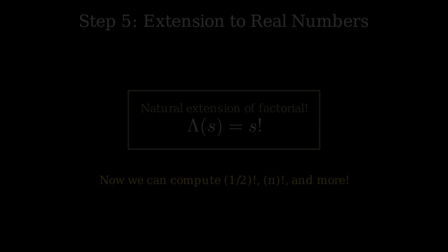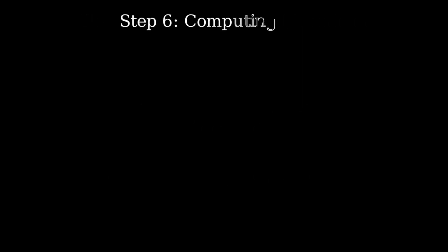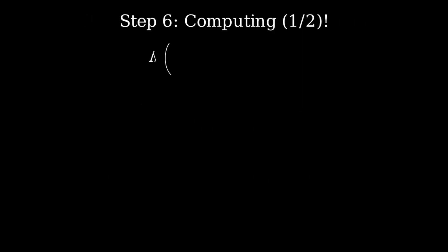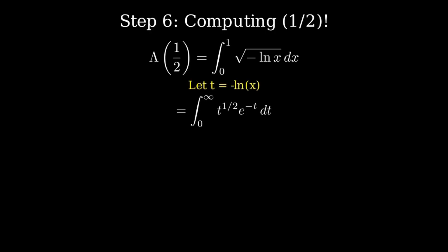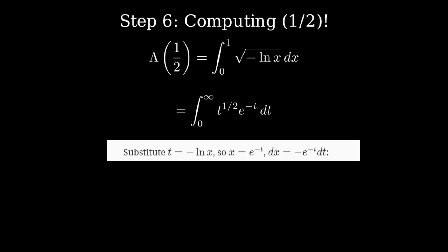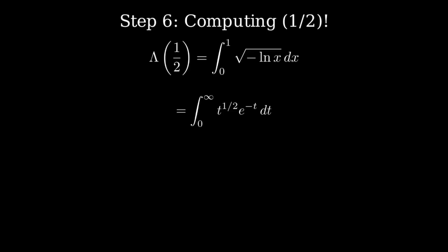Now let's actually compute something concrete: 1/2 factorial. We need to evaluate λ(1/2) = ∫₀¹ √(-ln x) dx. Let me make a substitution: let t = -ln x, then x = e^(-t) and dx = -e^(-t) dt. When x goes from 0 to 1, t goes from infinity to 0. After the substitution, our integral becomes ∫₀^∞ t^(1/2) · e^(-t) dt.